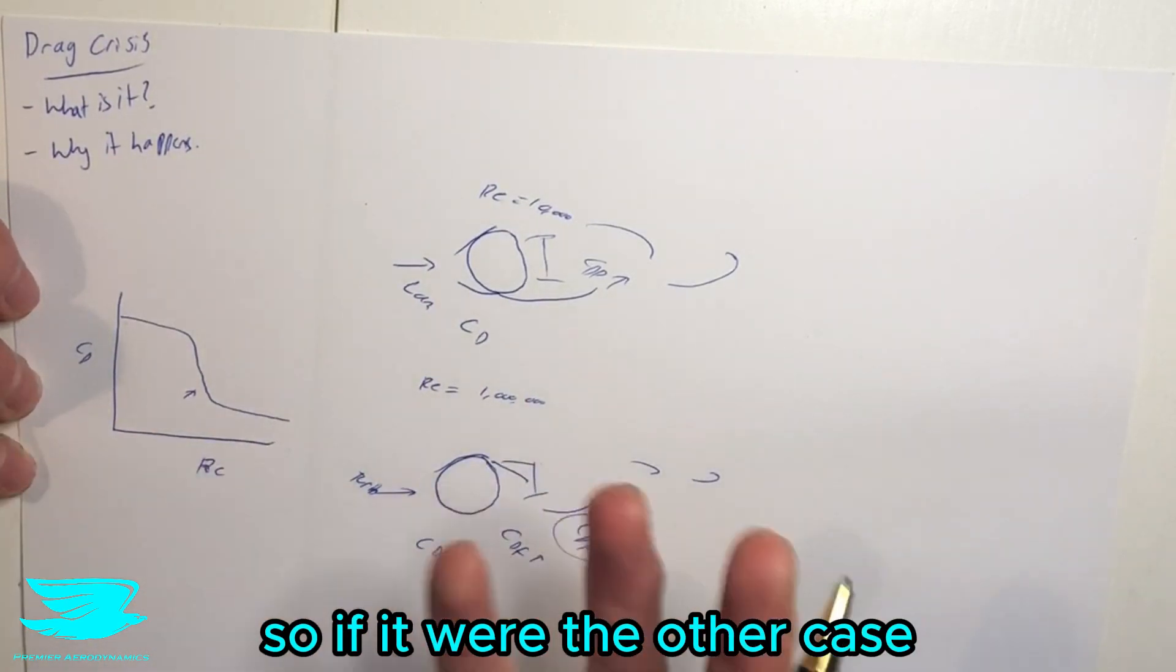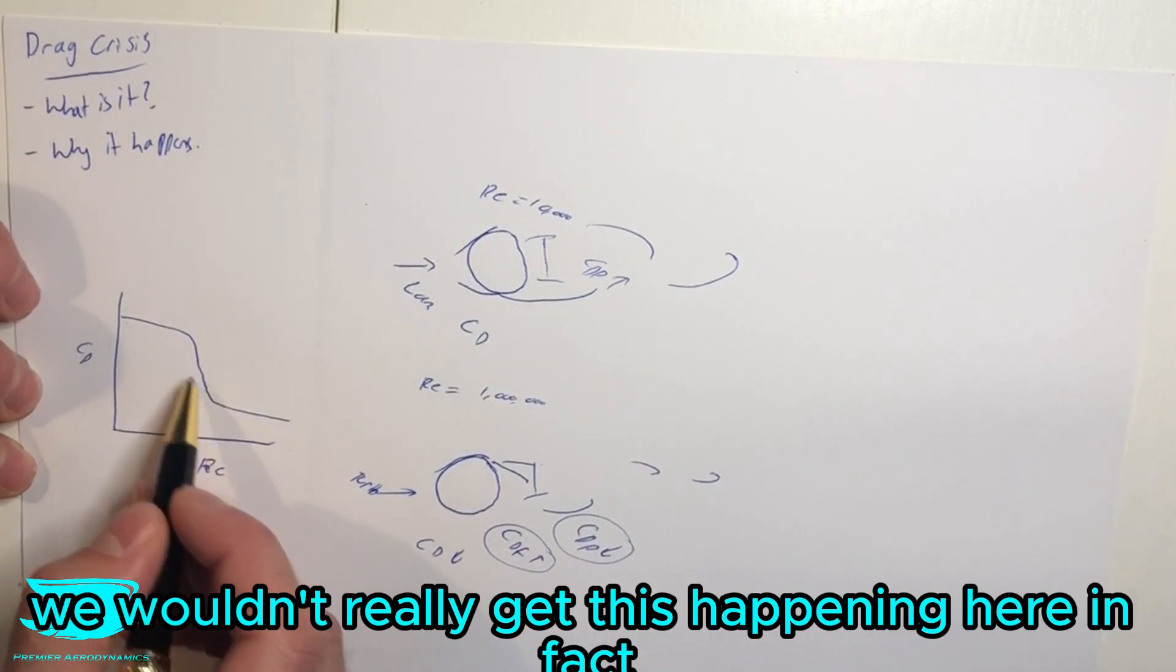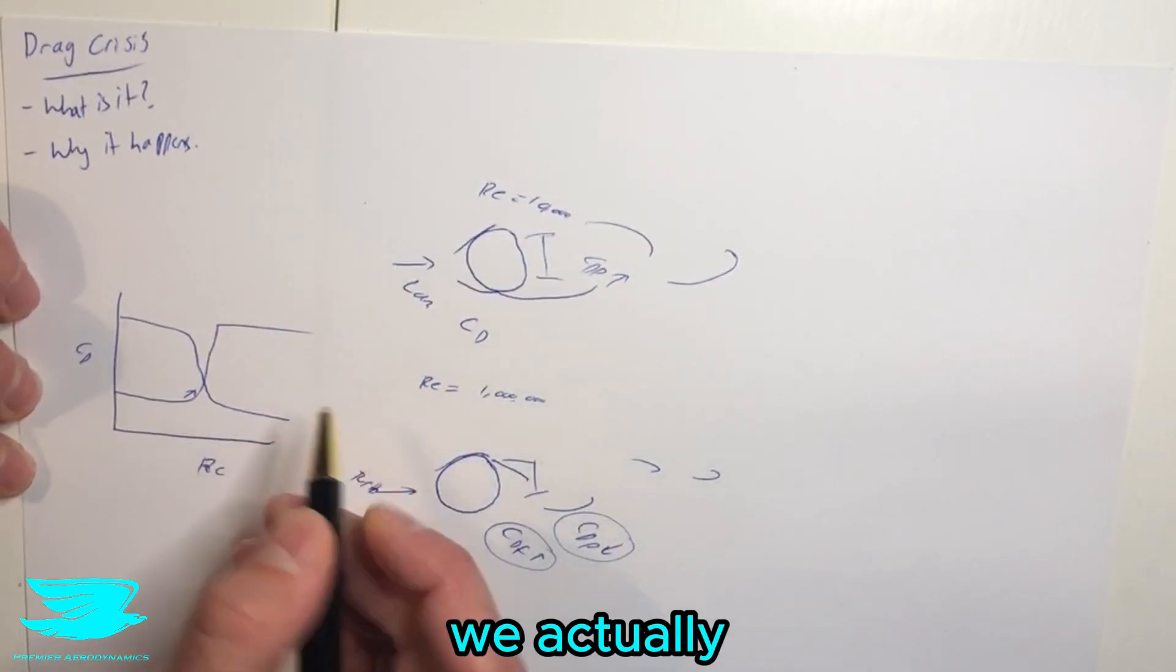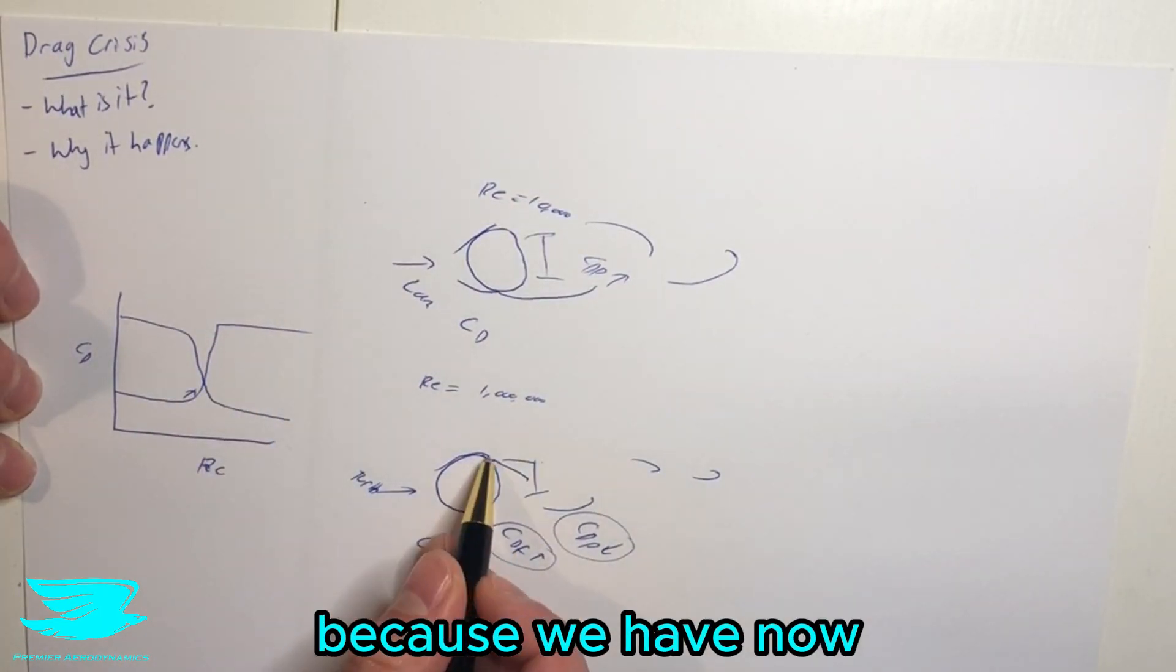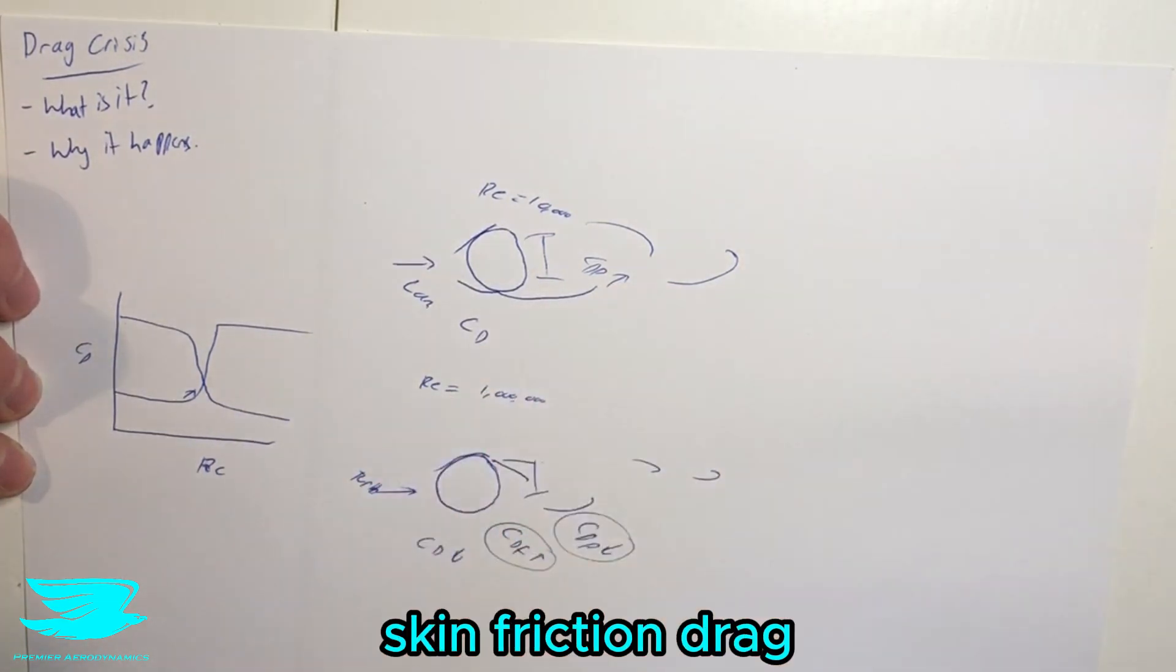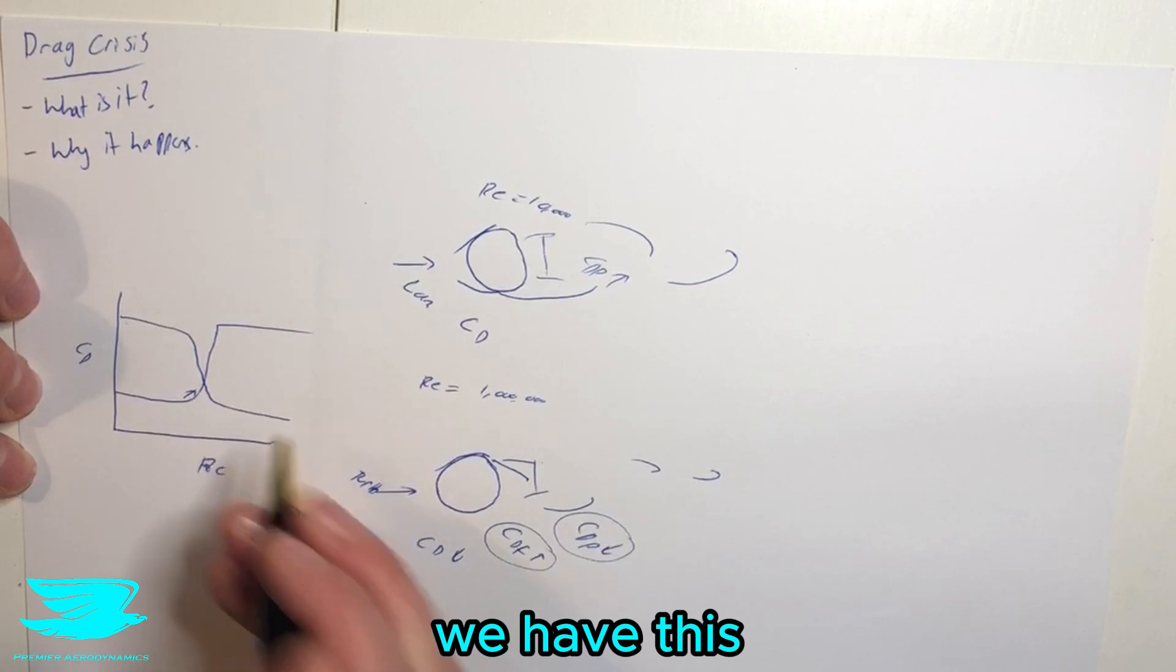So if you're in the other case, for example, let's say the skin friction drag was the dominant component of drag, we wouldn't really get this happening here. In fact, we might actually get the opposite thing happening where we actually get an increase in the drag because we have now transitioned to turbulence and the turbulent boundary layer has a higher skin friction drag. But because we have this wake here as a bluff body, we get this thing happening.